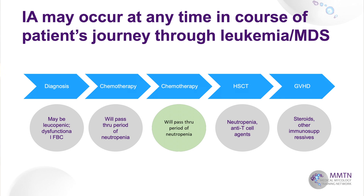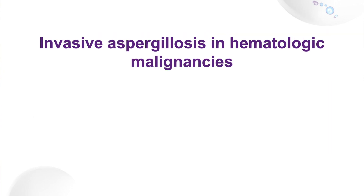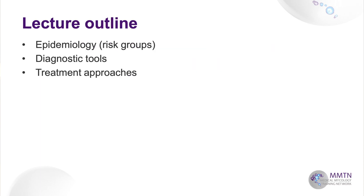When they have chemotherapy, there are bouts of neutropenia. If they come through all that and become eligible for a transplant, that's another bout of neutropenia during conditioning. When they engraft, they may come down with graft-versus-host disease, necessitating steroids — another risk factor for invasive aspergillosis and other mold diseases. So the talk should really be entitled Invasive Aspergillosis in Patients with Hematological Malignancies.